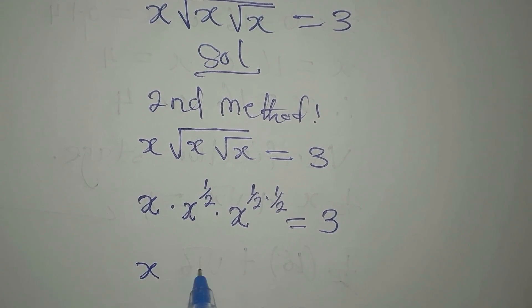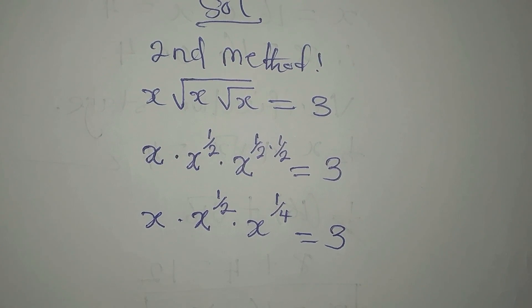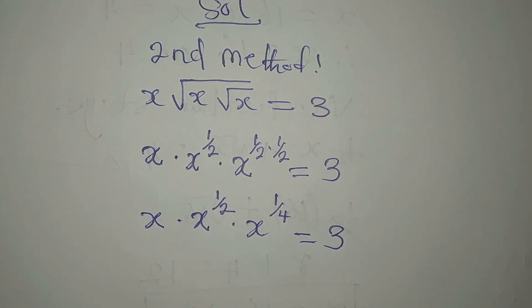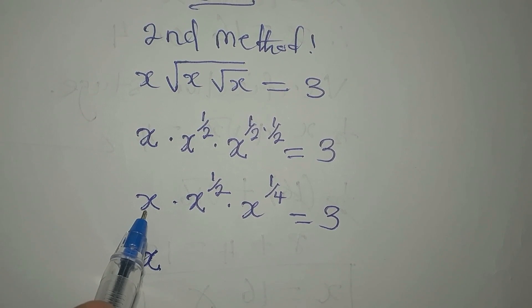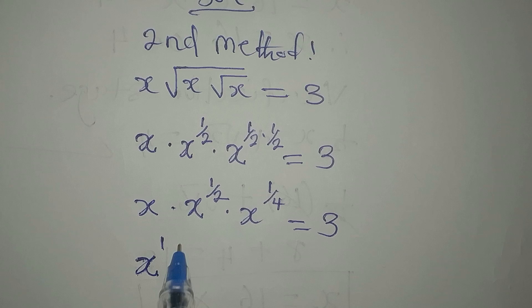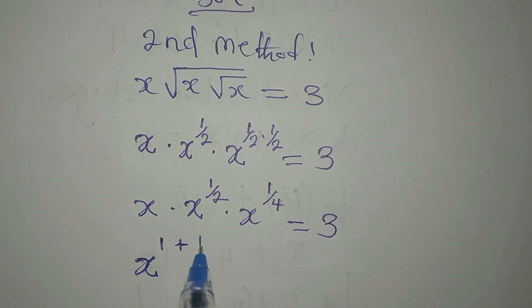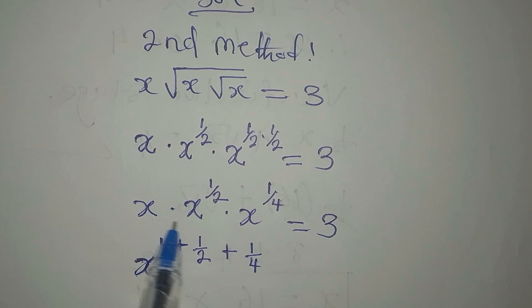Simplifying, we have x times x to the power of 1 over 2 times x to the power of 1 over 4 equals 3. The next step is to use the law of indices that says if you multiply terms with the same base, you pick one base and add the powers. This x has a visible power of 1, plus 1 over 2, plus 1 over 4 — we are adding the three powers because we are multiplying all three terms.